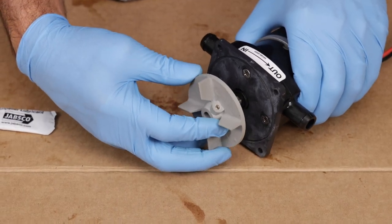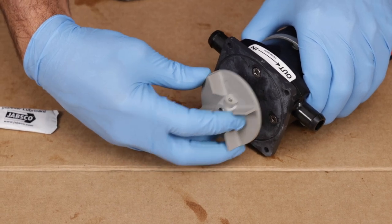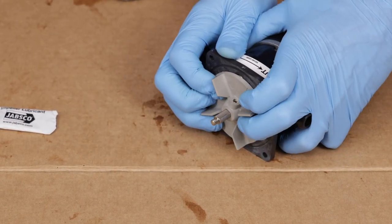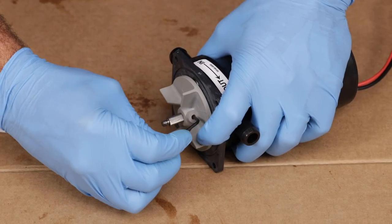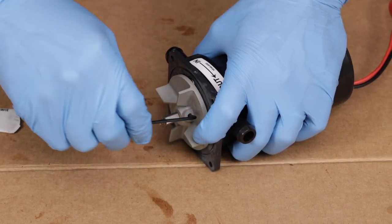Next, install the centrifugal impeller. Align the hub with the shaft and, to assure that the sealing sleeve doesn't leak, firmly hold the impeller against the sleeve as you tighten the set screw.